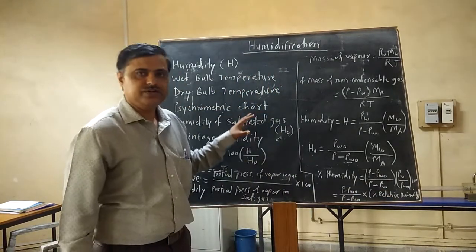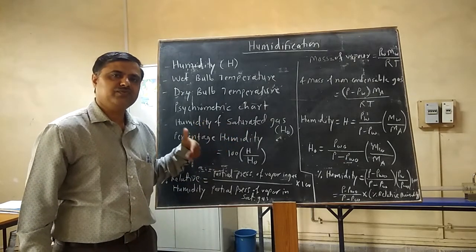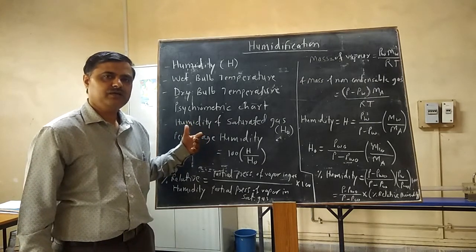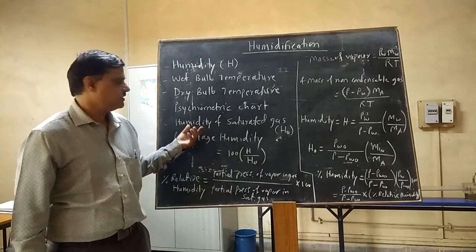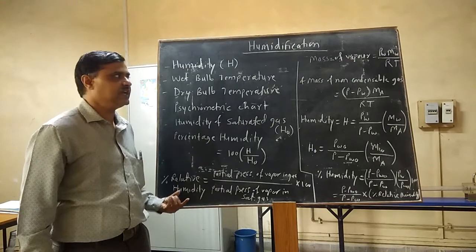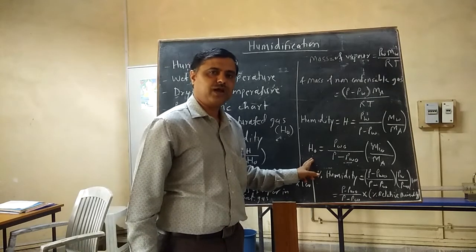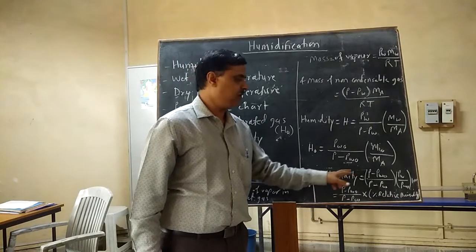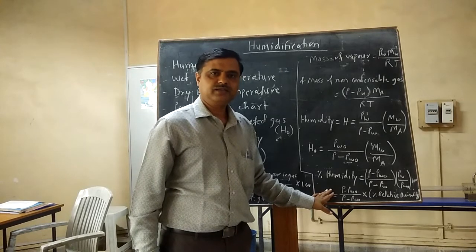We have discussed what is meant by humidification and dehumidification, the different definitions of humidity, wet bulb temperature, dry bulb temperature, the purpose of the psychometric chart for measuring humidity, humidity of the saturated gas, percentage humidity, percentage relative humidity, and the formulas for H and H0 in terms of partial pressures. Thank you very much.